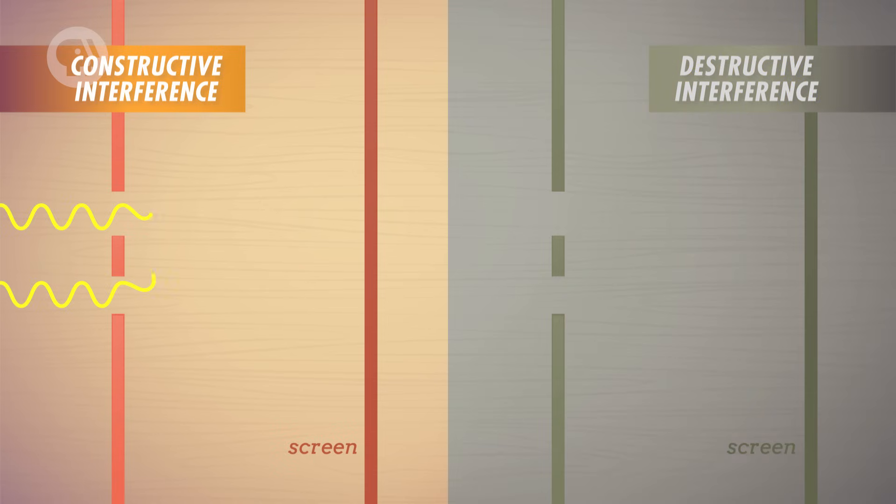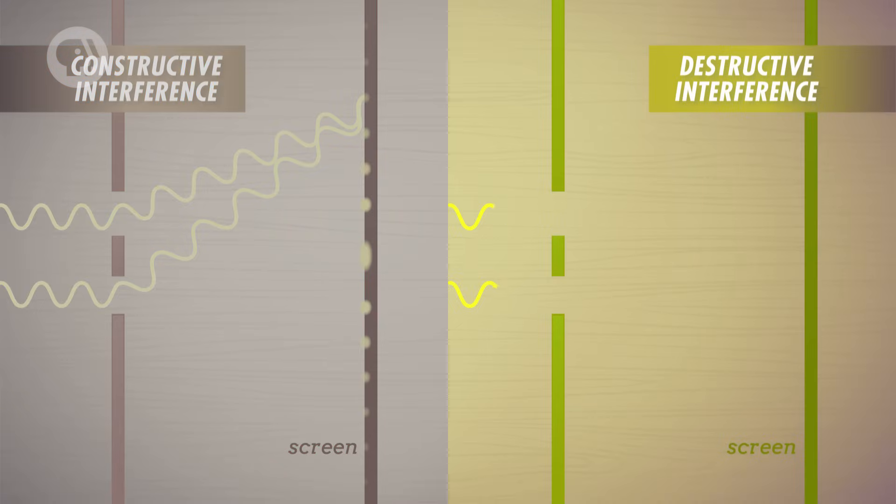So light waves will interfere either constructively or destructively, depending on the size of this path difference. When the waves are an exact number of wavelengths apart, the crests and troughs will line up, creating constructive interference and a bright line. But when the waves are shifted by exactly half a wavelength, or by 1.5 wavelengths, or 2.5 and so on, light waves will interfere destructively.